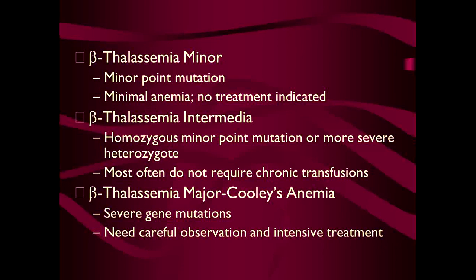In beta-thalassemia minor there is a minor point mutation, minimal anemia clinically, and usually no treatment is indicated. In beta-thalassemia intermediate it is homozygous with a minor point mutation; most often they do not require chronic transfusions. But in beta-thalassemia major, or Cooley's anemia, there is a severe gene mutation requiring careful observation and intensive management.